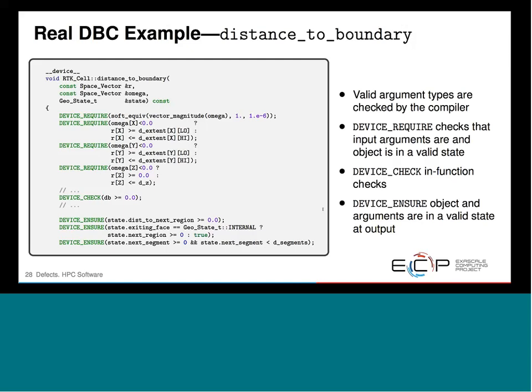The next thing it does is make sure that the position of the point is inside the object where it's calculating distance to boundary. Then it does some work to calculate the next distance to boundary, checking that the distance being calculated is greater than or equal to zero — we shouldn't be getting a negative distance to boundary. When we leave, we also check that the final distance to next region is greater than or equal to zero, verifying the function executed as designed.